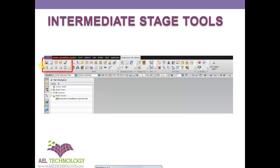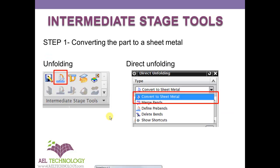We open the part, go to Progressive Die Wizard application and we will start from here. First is converting this part to a sheet metal. Progressive Die Wizard doesn't know whether this part is a sheet metal or plastic part or anything, so first we need to convert this part to a sheet metal.